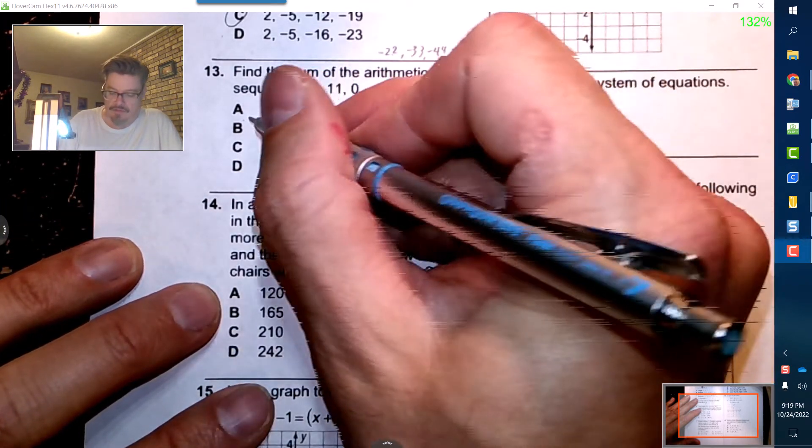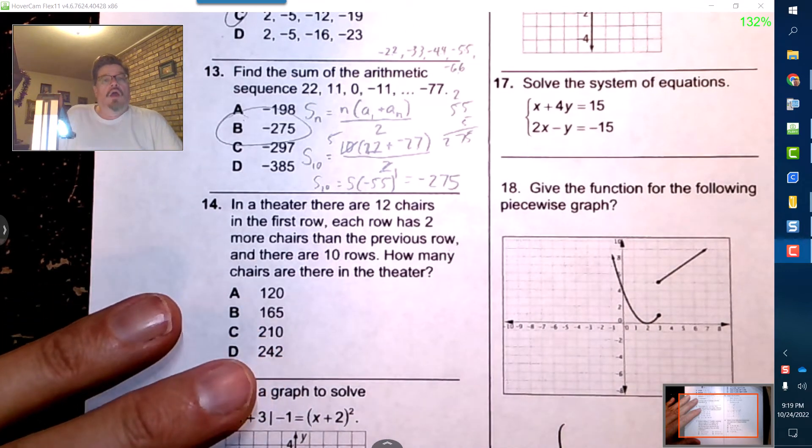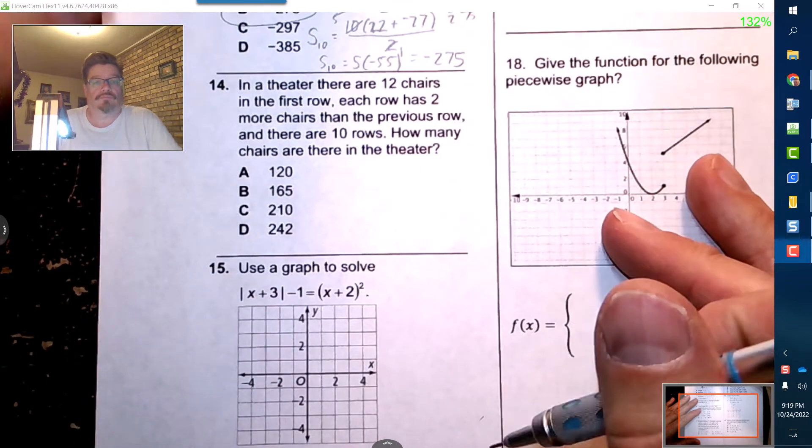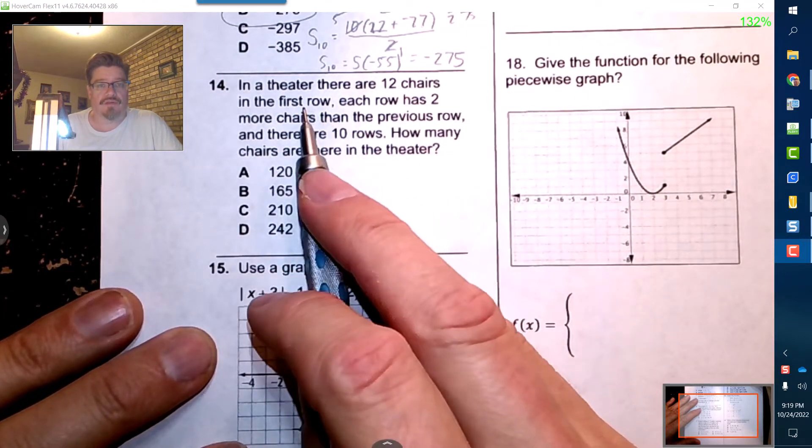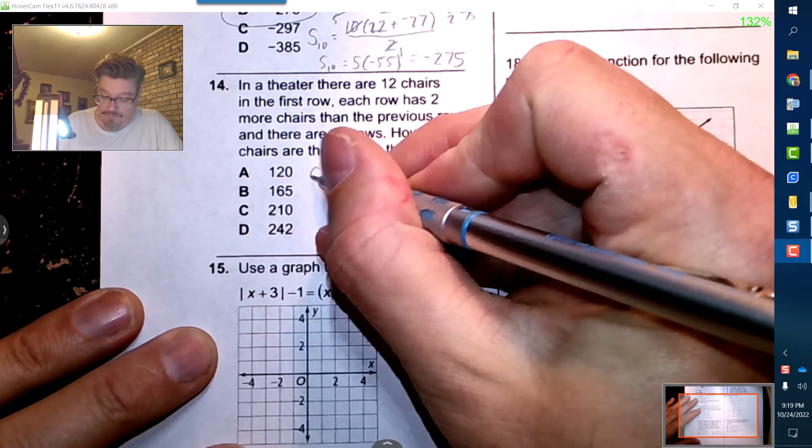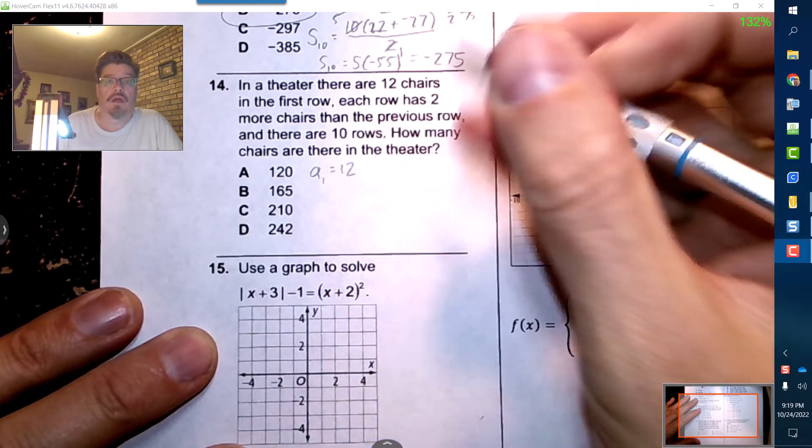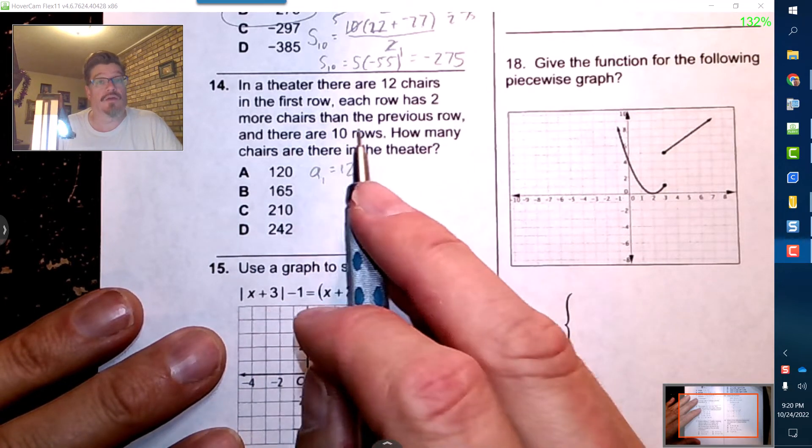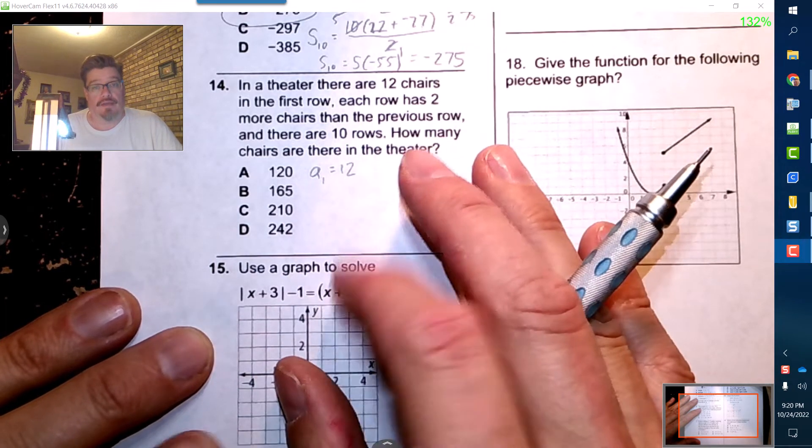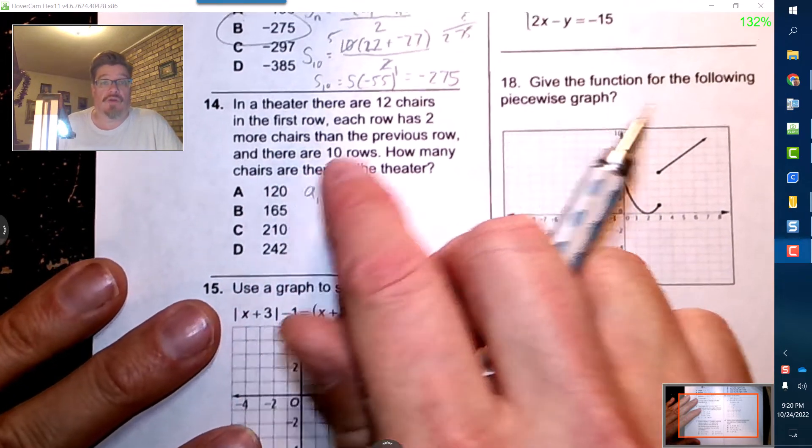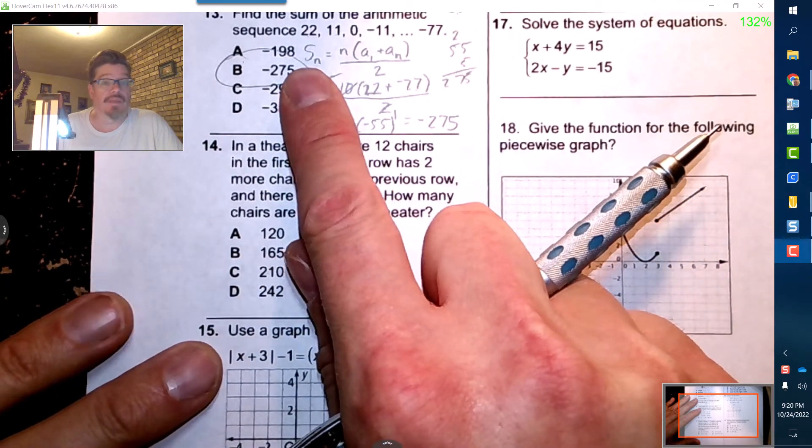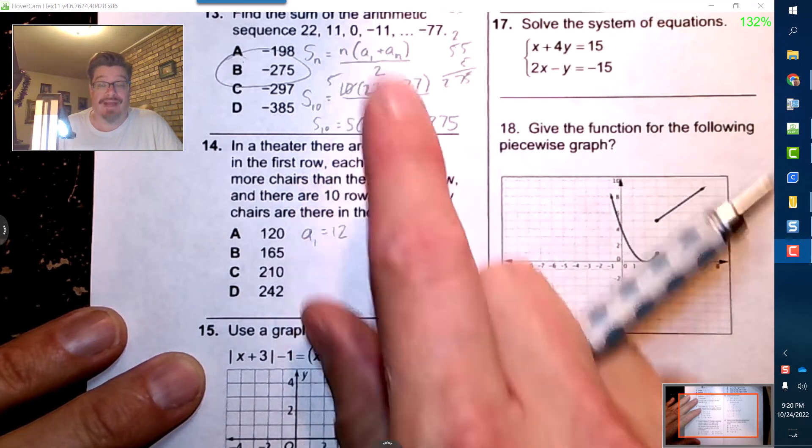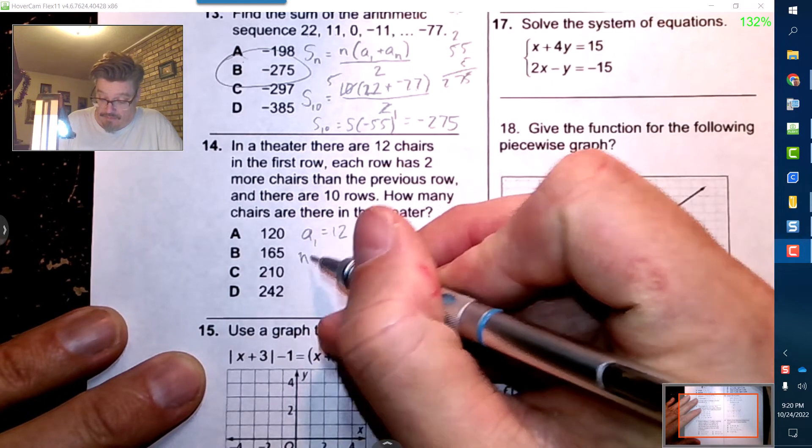All right, so now number 14, we have a theater, there are 12 chairs in the first row. So first row is 12. Each row has 2 more chairs than the previous row and there are 10 rows. So I need to know how many chairs there are, which means I need a sum.